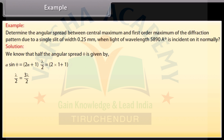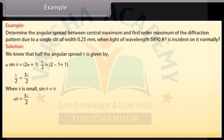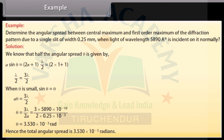On equating this, we get λ/2 = 3λ/2. When theta is small, the value of sin theta is equivalent to theta. It gives a·theta = 3λ/2. On putting the values, we get the value of theta = 3.530 × 10⁻³. Hence, the total angular spread = 3.530 × 10⁻³ radians.